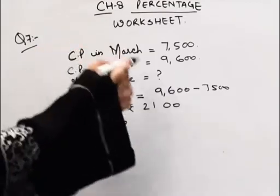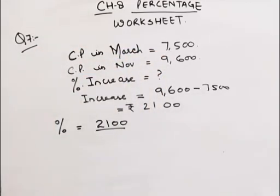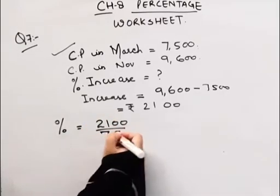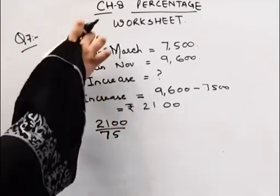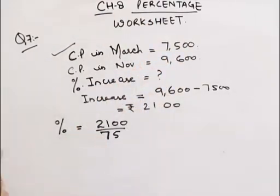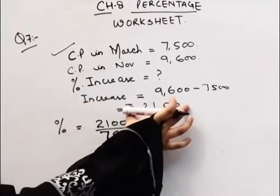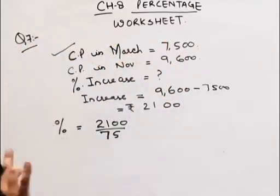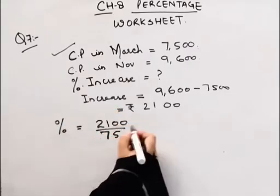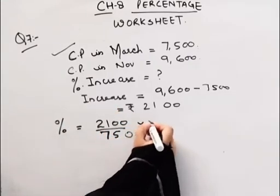Now which value will we take? We will take the cost price in March because this is the initial value. Suppose this is the cost price and this is the selling price. When we find the profit, how do we do it? Profit divided by cost price. We use the initial value. Same is the case - we will find the percentage of the initial value.